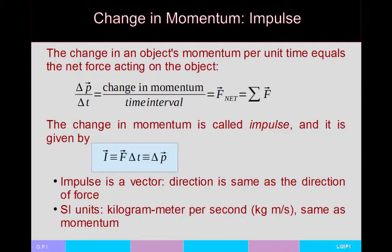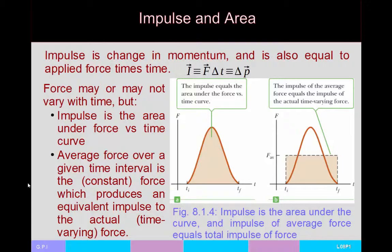There is actually a name for change in momentum: impulse. Some people use I, some use J for impulse. The change in momentum per unit time is net force, but the change in momentum simply is impulse. Therefore, to get the change in momentum you multiply force by the time over which the change occurs: impulse = F × Δt. Impulse must be a vector with the same direction as the force and the same SI units as momentum. If force varies over time, you can find impulse as the area under the force-versus-time curve, or equivalently use the average force times time.